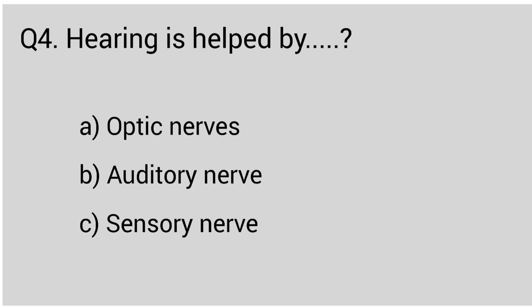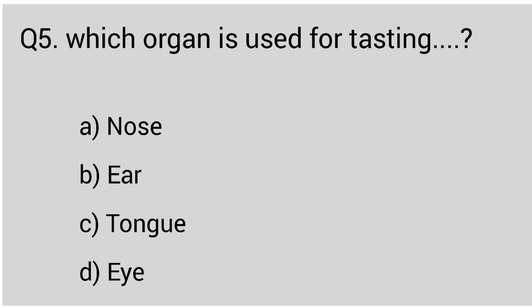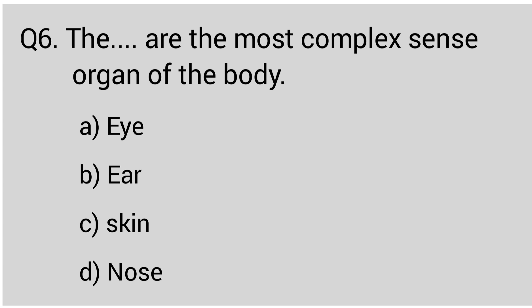Question number four: hearing is helped by the auditory nerve. The correct answer is option B, auditory nerve. Question number five: which organ is used for tasting? The correct answer is option C, tongue. Question number six: the eye is the most complex sense organ of the body. The correct answer is option A, eye.